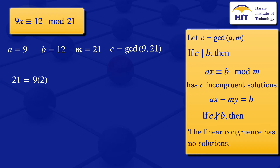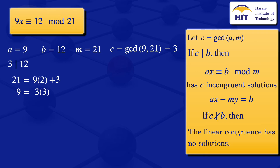Continuing: 9 = 3 × 3 + 0, since 9 − 9 = 0. The last non-zero remainder is 3, so gcd(9, 21) = c = 3. We check if c divides b: does 3 divide 12? Yes. So we conclude the linear congruence has three incongruent solutions.